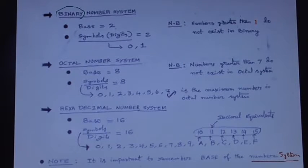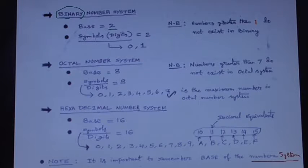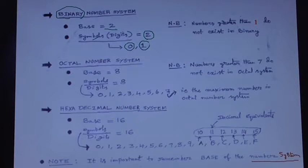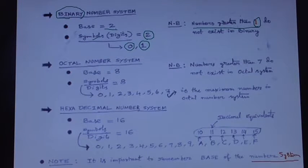For the binary number system, the base is 2. So the number of digits or symbols available are 2. As counting always starts from 0, the digits available in the binary system are 0 and 1. Note that numbers greater than 1 do not exist in the binary number system.